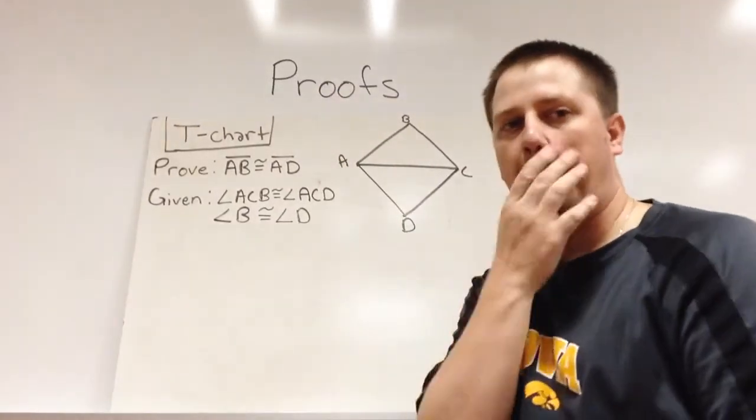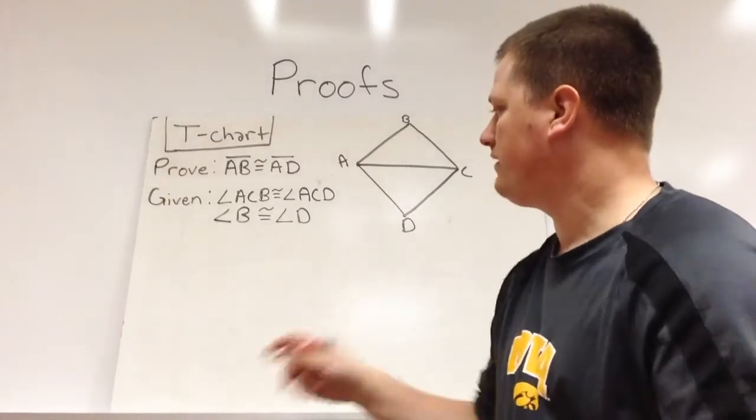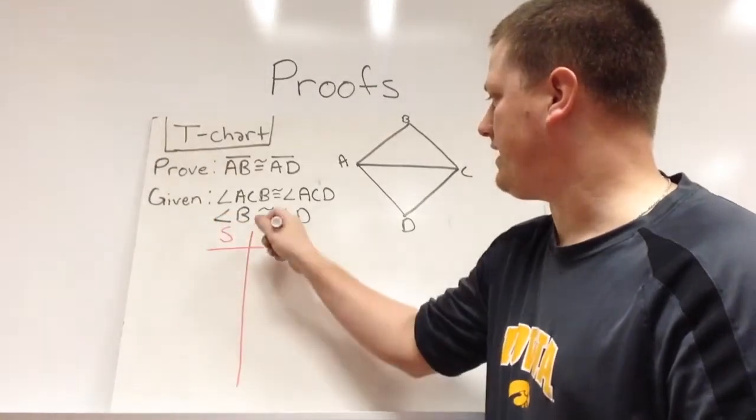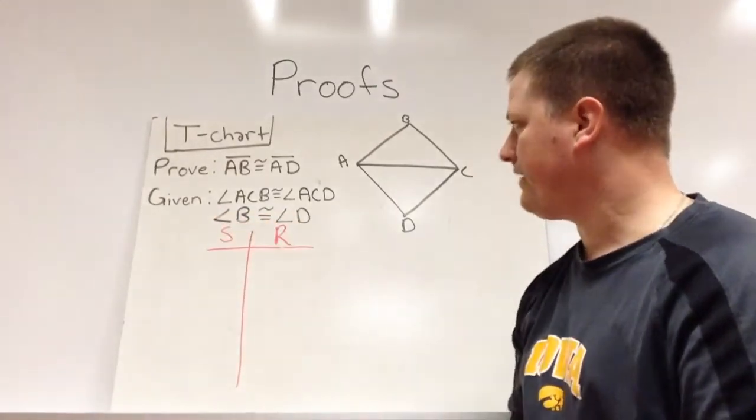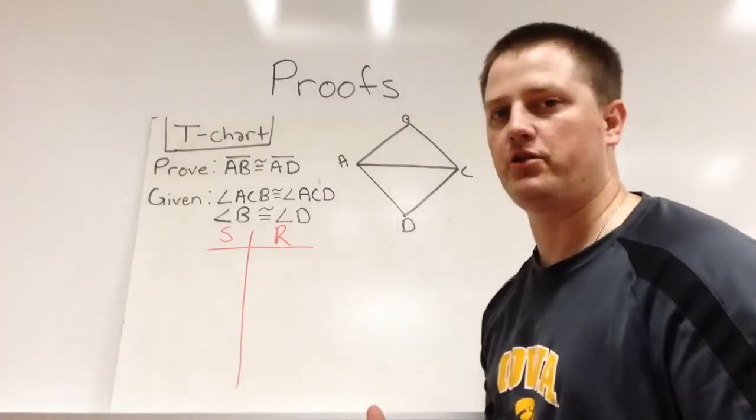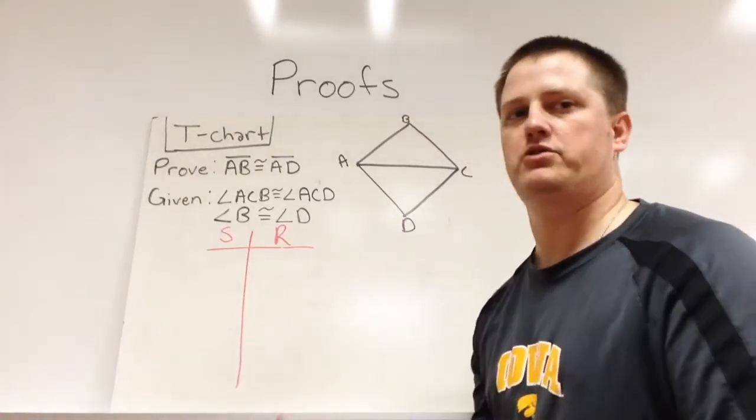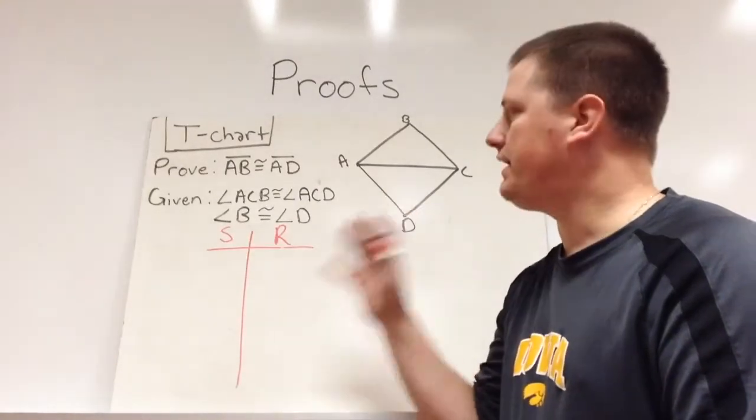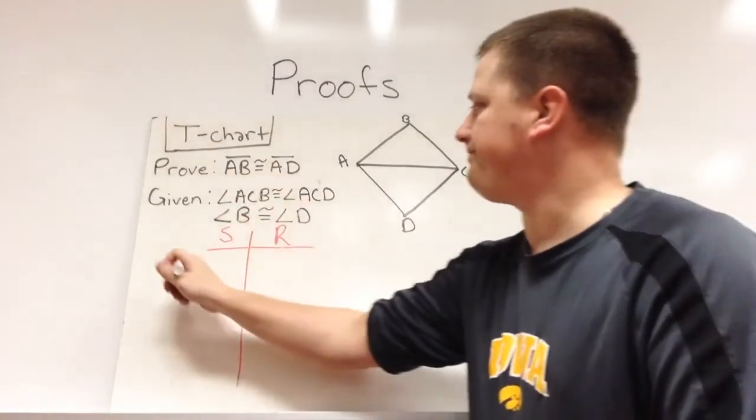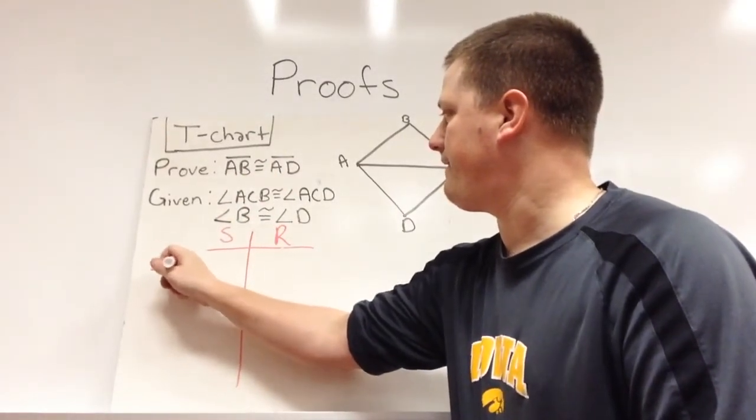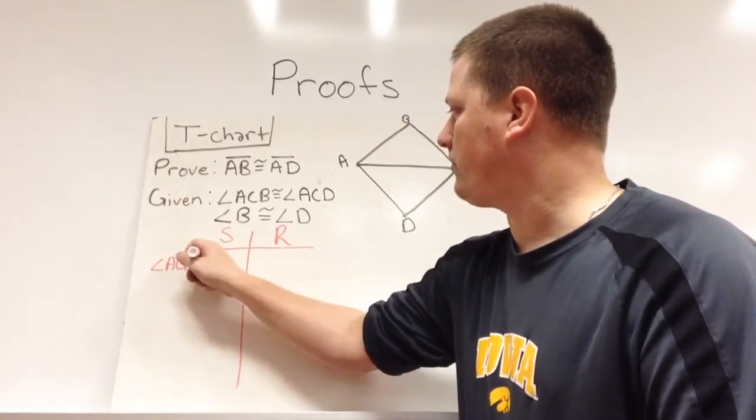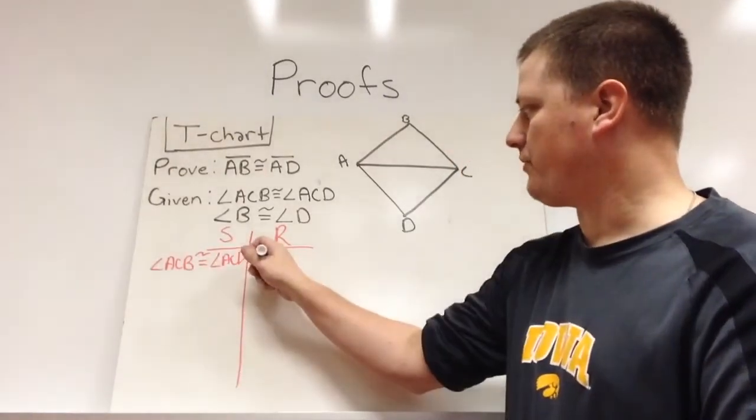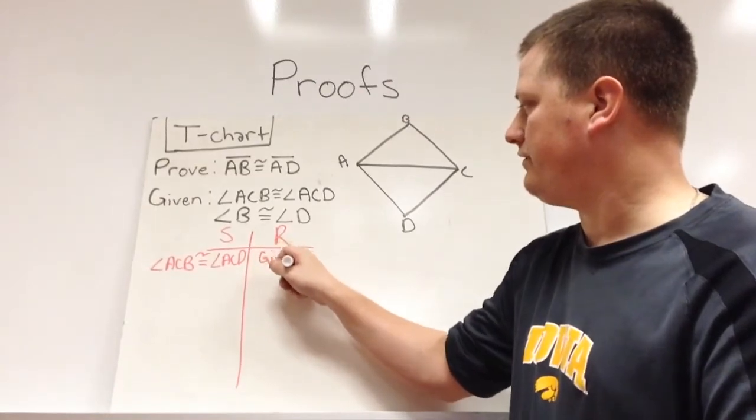So what we're going to do here is an example of a t-chart. Here I'm going to make my t-chart, and instead of writing it out I'm just going to put S there and R there for statement and reason. We always have a picture. The first thing that we should always do with any proof, t-chart, flowchart, or anything else, is focus first on the givens. So the givens that we have are that angle ACB is congruent to angle ACD. And the reason for that is that we're told. It's a given.